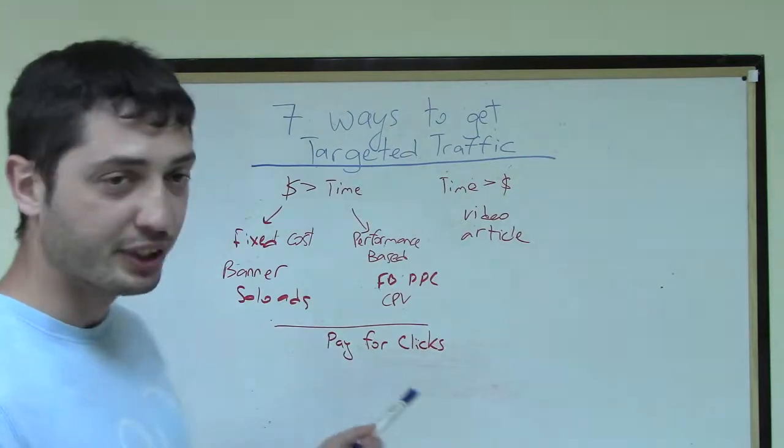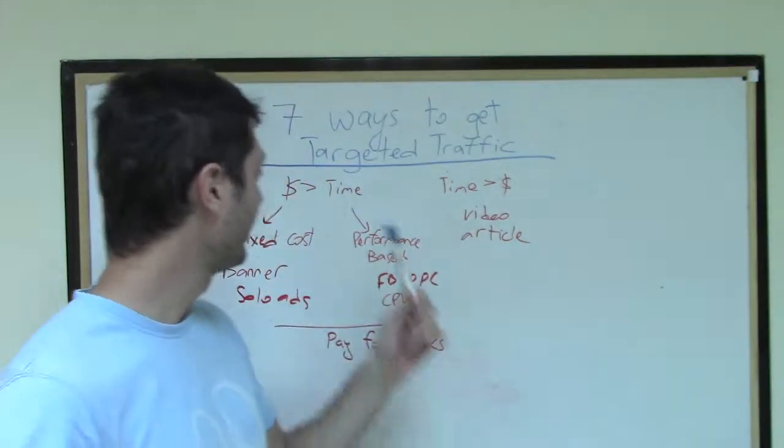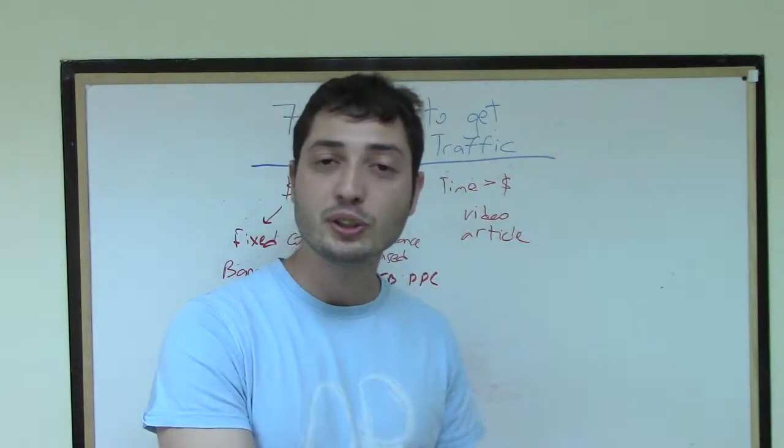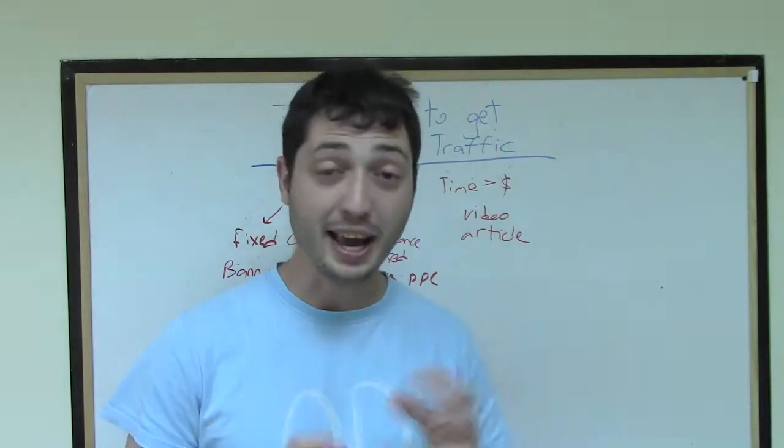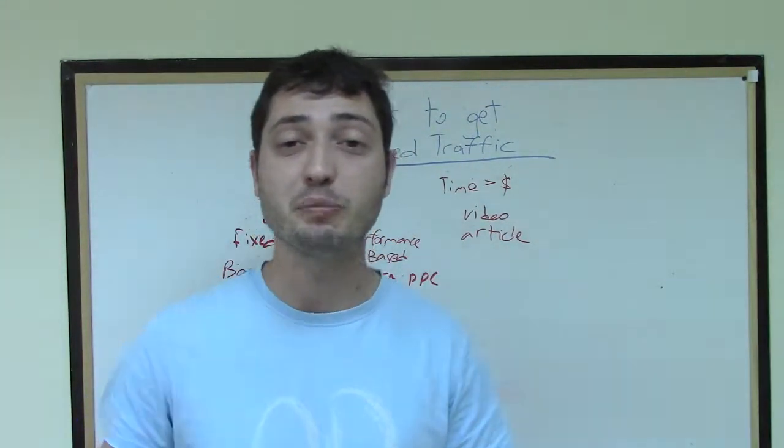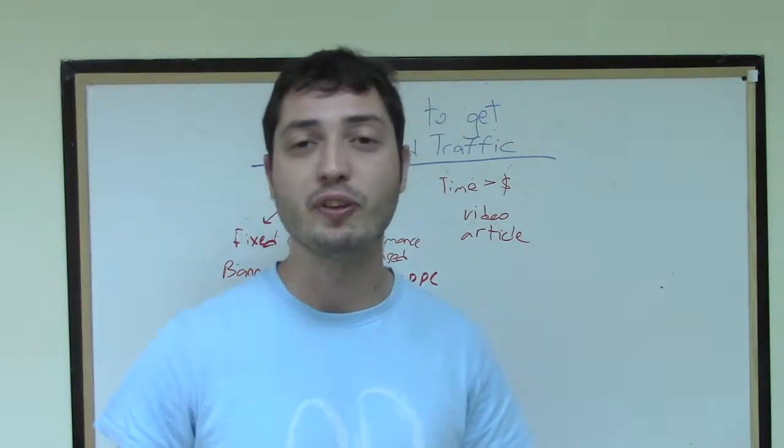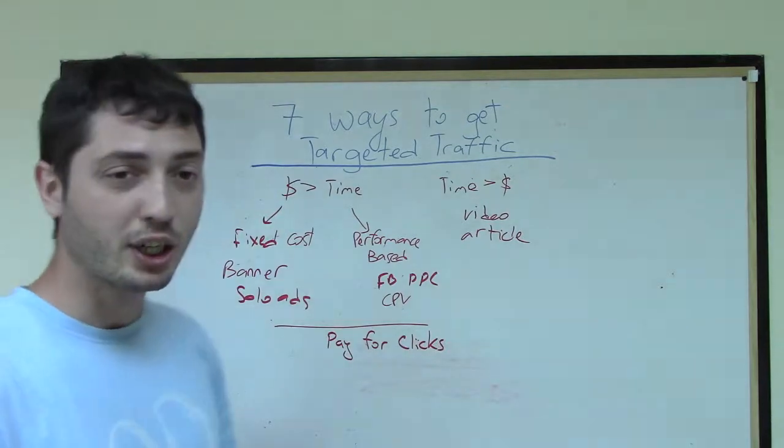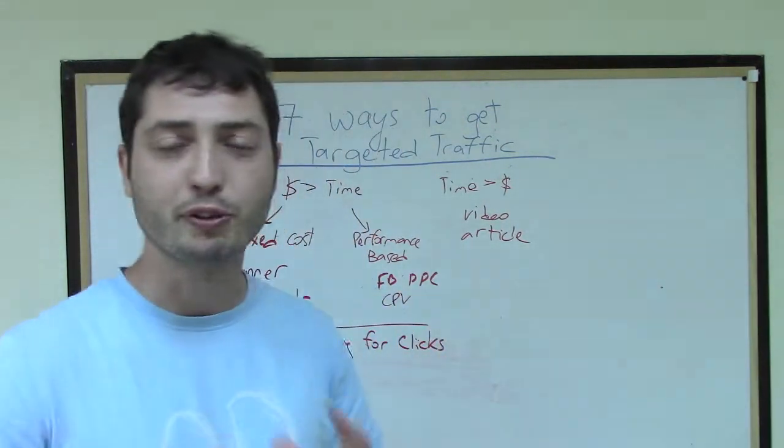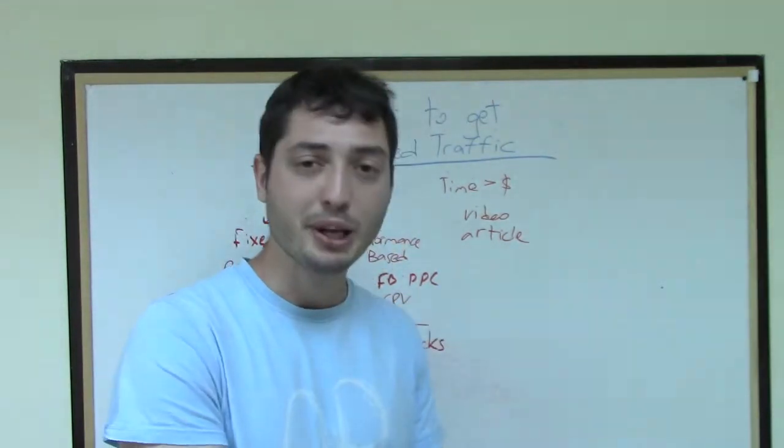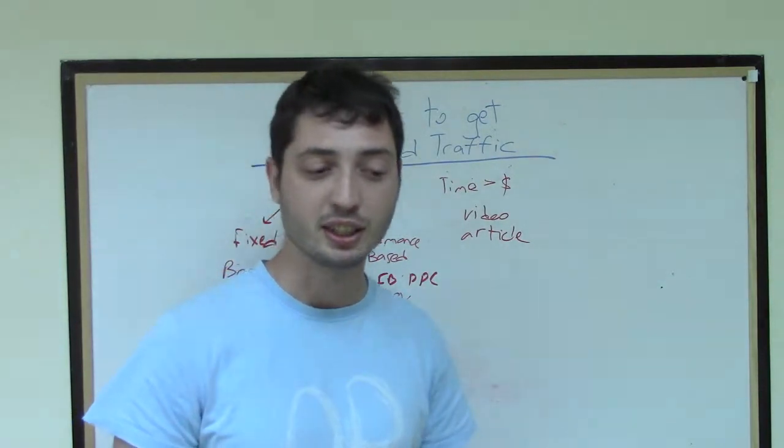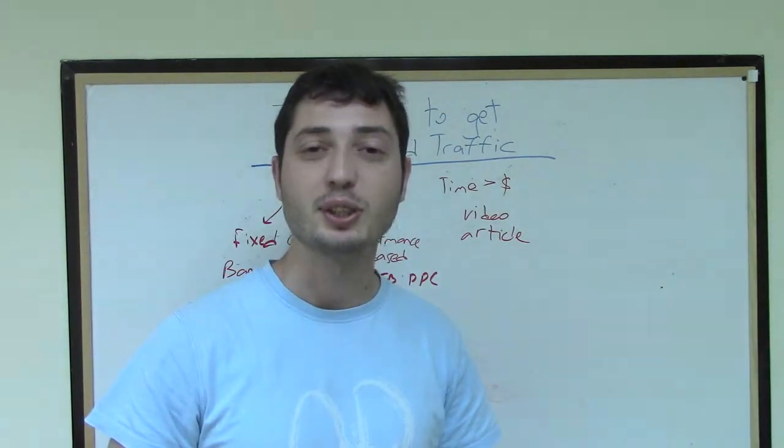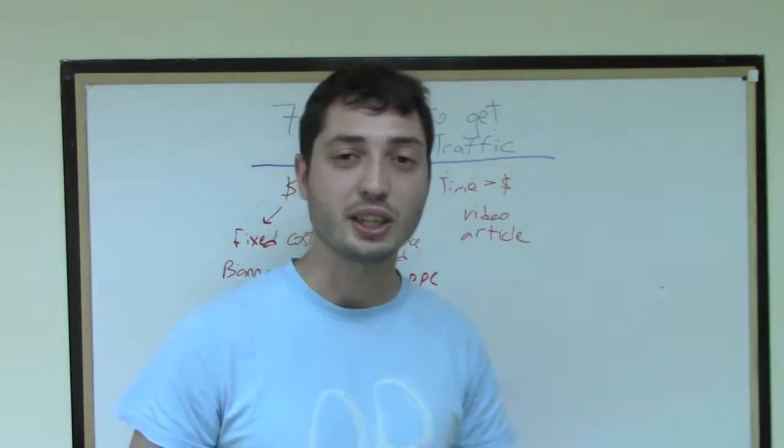There is another traffic source that doesn't fit into those two categories. It's called pay for clicks. You can go to some places, to individuals or to some traffic agencies and you can ask for a certain amount of clicks for a certain amount of money. Like, I want to pay $550 for 500 targeted clicks. It doesn't fit in paid traffic sources because it's not fixed cost or performance based. You know you're going to pay a certain amount for certain clicks and it doesn't vary. It's actually one of the best ways to get targeted traffic if you trust the source.